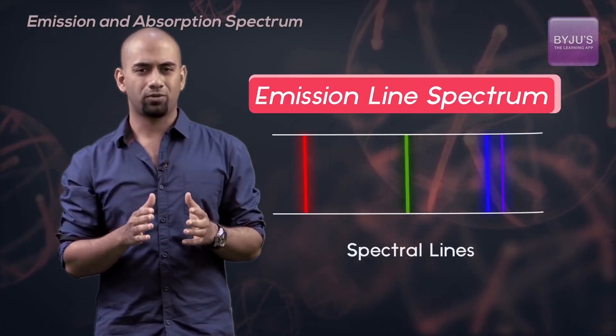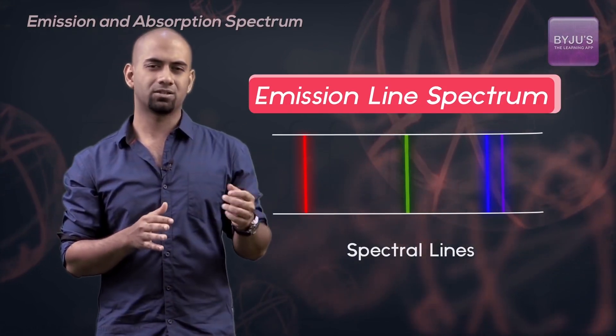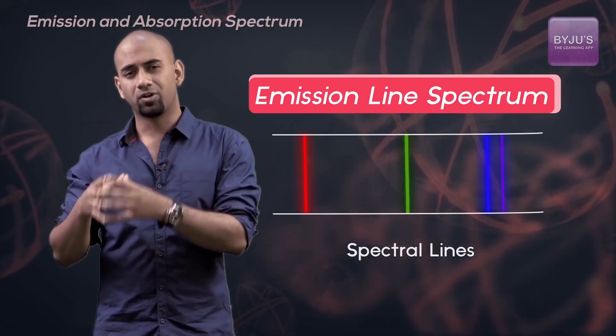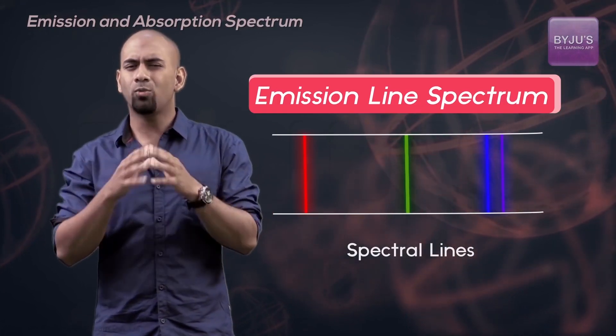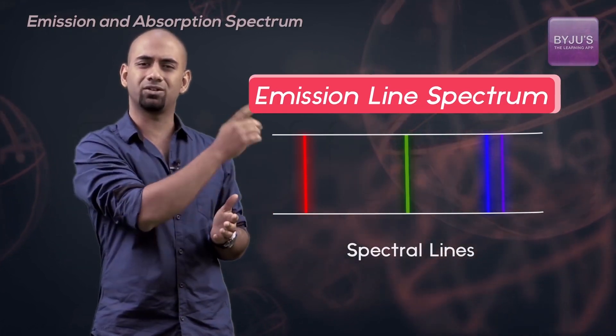It was found that this set of spectral lines was characteristic for a particular element. In other words, an element always produced the same set of spectral lines.